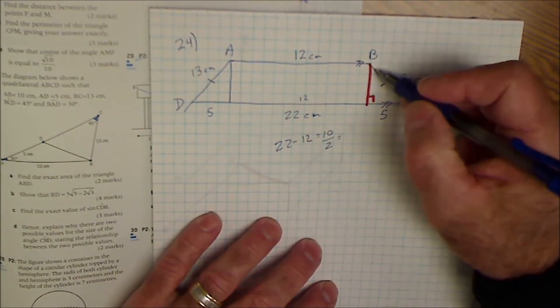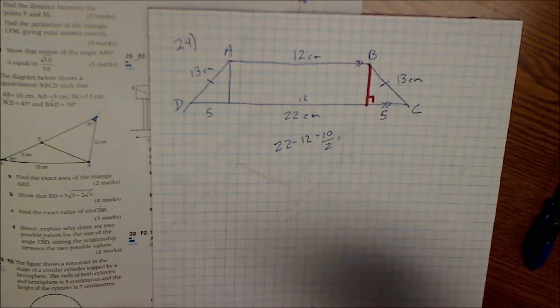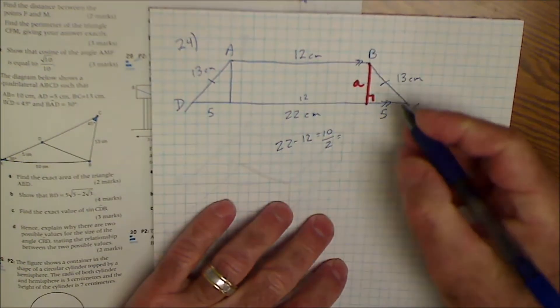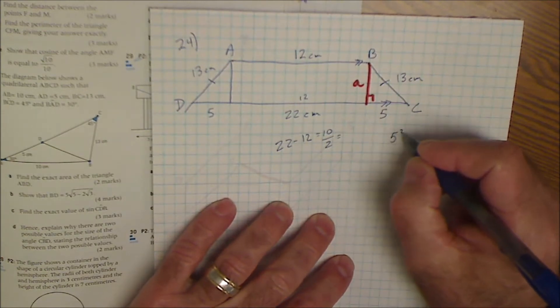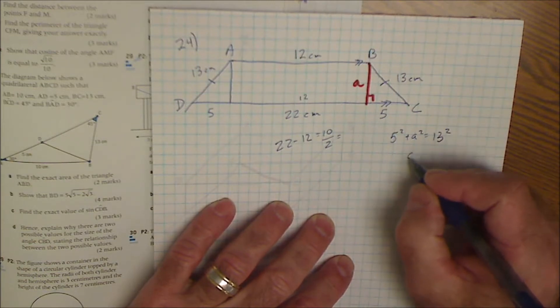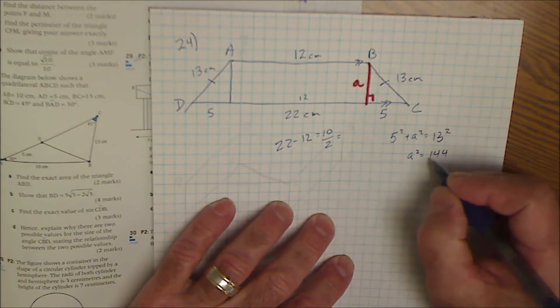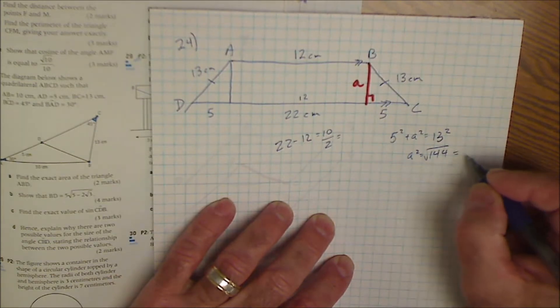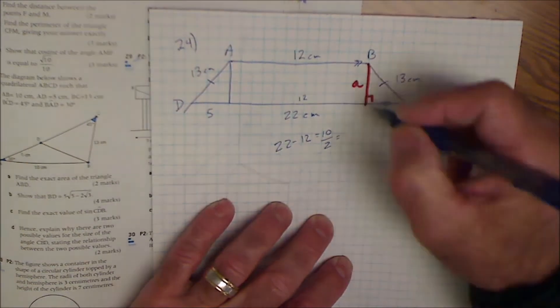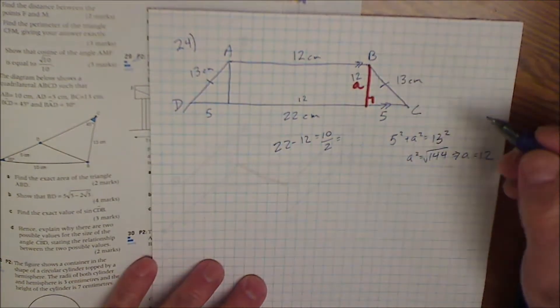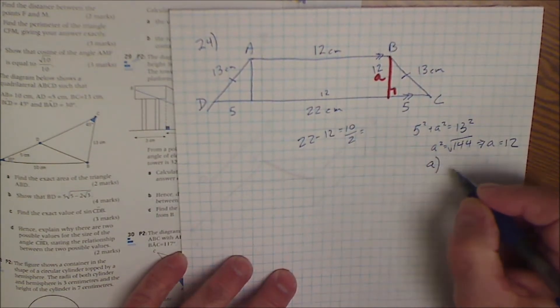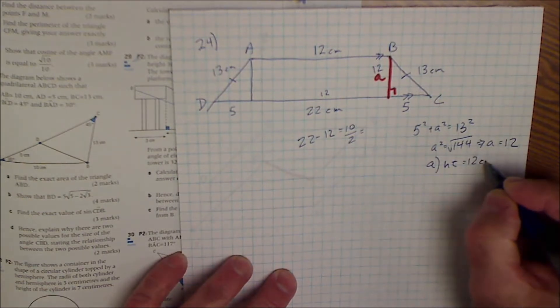So then I have a right triangle here. 5 squared plus what squared equals 13 squared. So it's a Pythagorean triple. 5 squared plus A squared equals 13 squared, and A squared equals 144. A is equal to 12. So that's this height right here is 12. Part B, so the answer to A is height equals 12 centimeters.